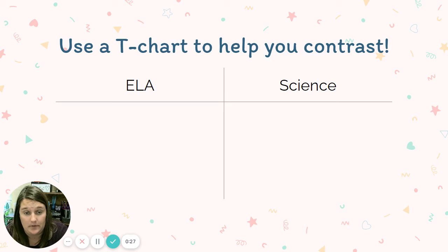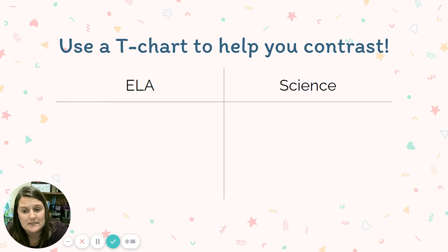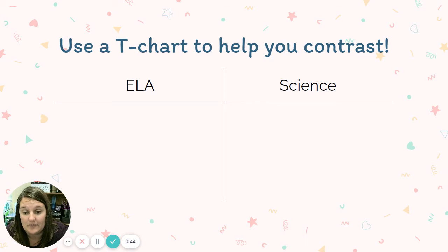We're going to use a t-chart to help you contrast. So do me a favor — just pause right now and make a t-chart on a piece of paper. Pause my video, make a t-chart, and come up with some differences between ELA and science. Again, you're looking for the differences. I'm going to give you just a second to get a piece of paper and do this, and we'll talk our way through it.